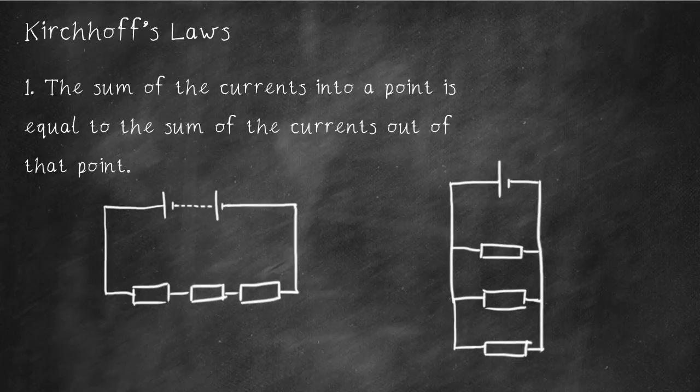Kirchhoff's first law is the sum of the currents into a point is equal to the sum of the currents out of that point. This is often shown like this, with a current going into a point and maybe several currents coming out of a point. And little labels I1, I2, I3, I4, and we say that I1 equals I2 plus I3 plus I4.